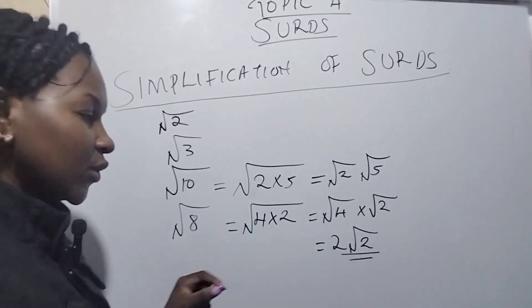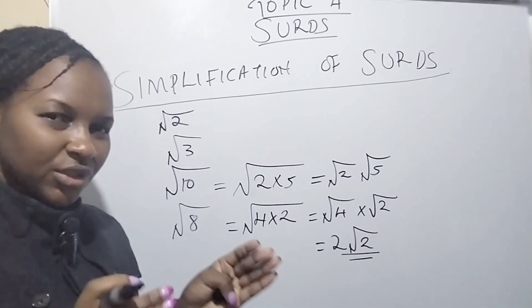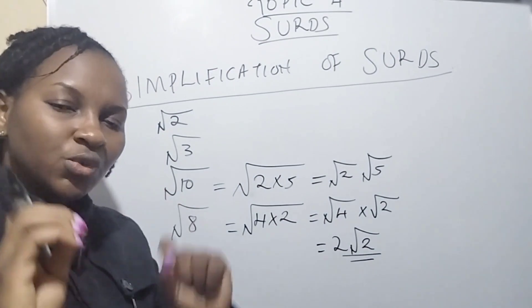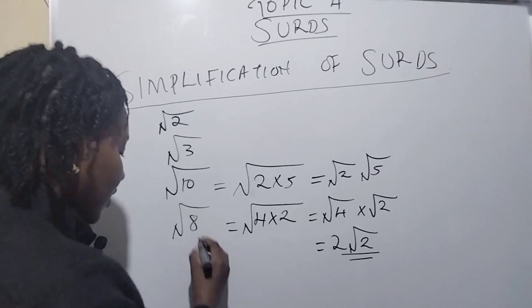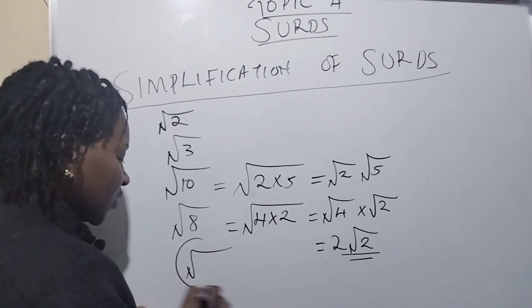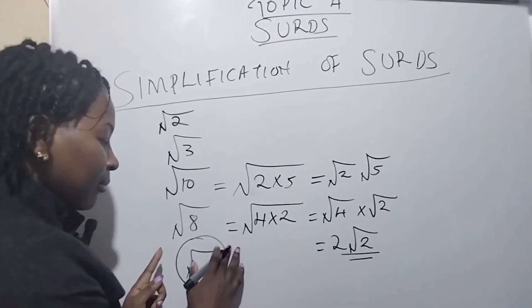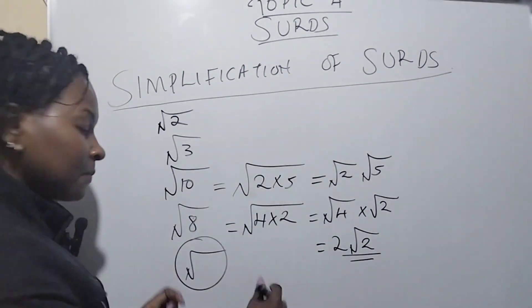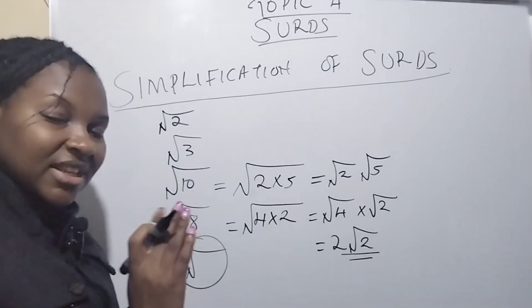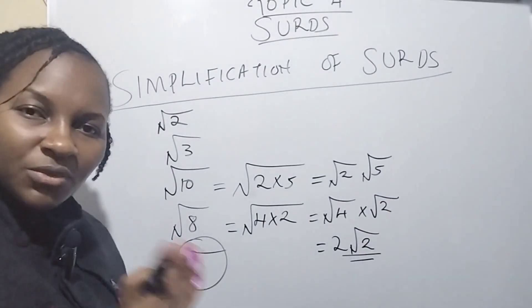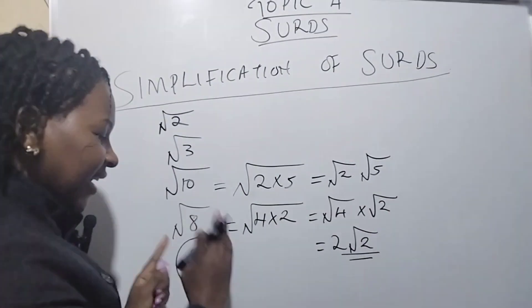Whenever you are told to simplify surds, you make sure that the number under the radical—this symbol of square root—is a prime number. When simplifying surds, any number that is under this radical must be a prime number.